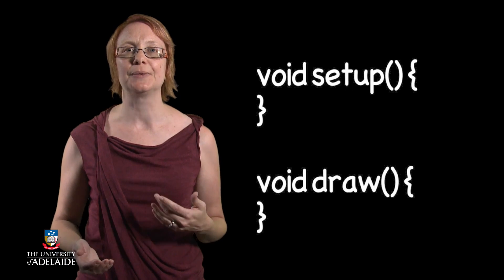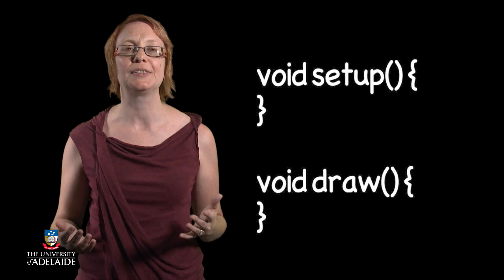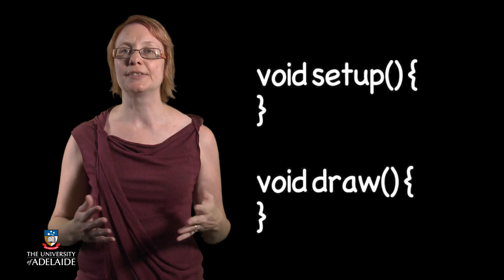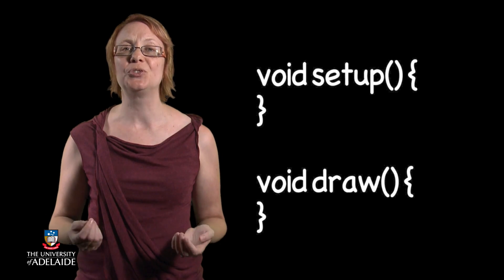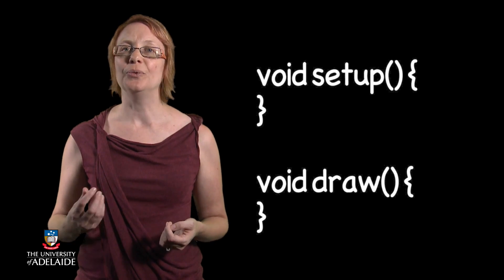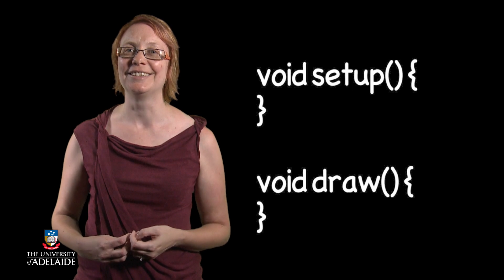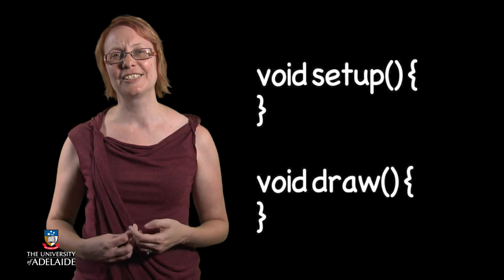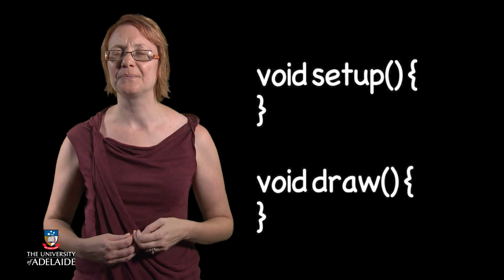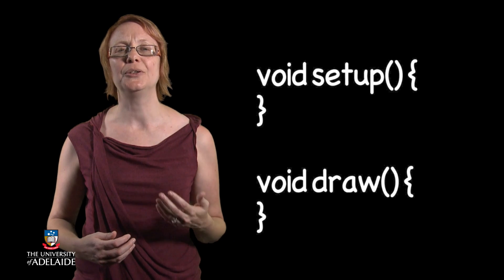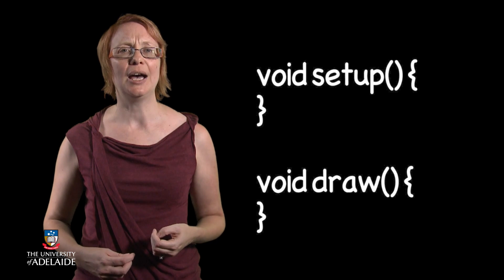The setup function is used for the task of setting up our canvas — doing everything we want to configure it correctly, such as setting the size of the canvas and the background color. The draw function is responsible for drawing and redrawing our images as our animation executes. What we have created here are two new functions: one called setup and one called draw.